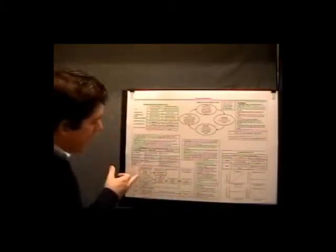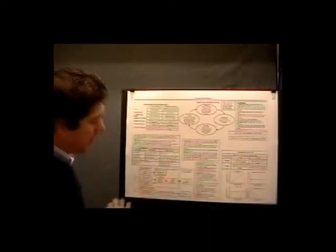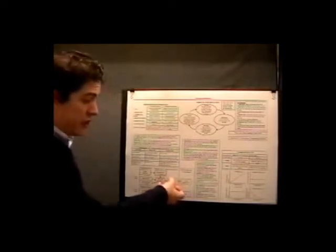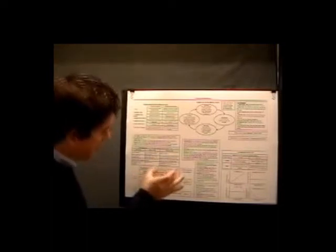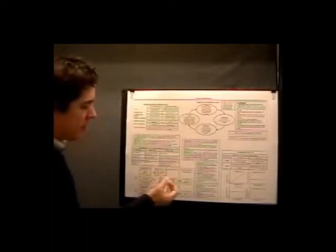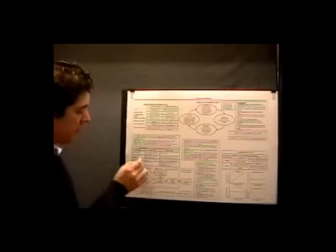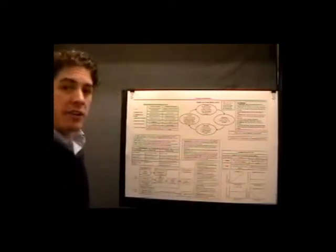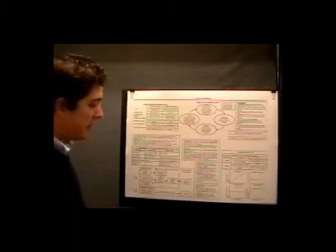Getting back to the chart: direct materials go into raw materials. Raw materials then go into work in process. Direct labor and manufacturing overhead also go into work in process. As work in process gets completed, it moves to finished goods. On the balance sheet, inventory is classified as raw materials, work in process, and finished goods — because that is how it shows up. Manufacturing costs — direct materials, direct labor, manufacturing overhead — all go into the inventory component of the balance sheet under these three classifications.